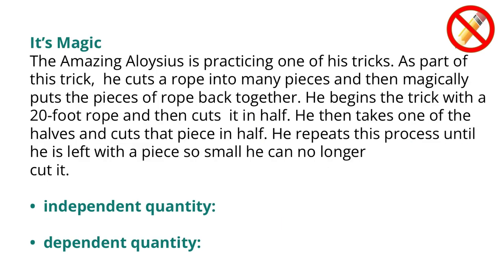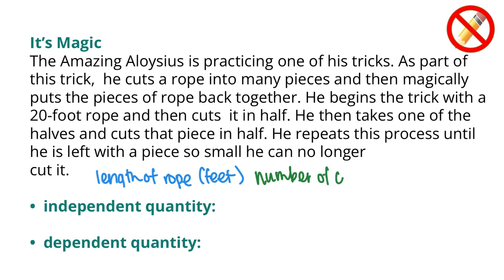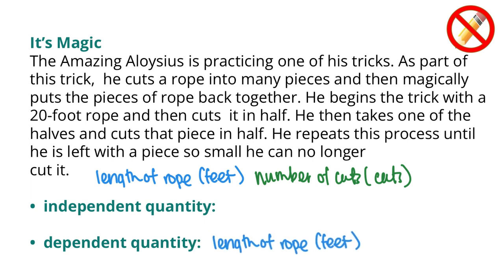The Amazing Aloysius is practicing a trick where he cuts a rope into many pieces and magically puts them back together. He begins with a 20-foot rope, cuts it in half, takes one half and cuts that in half, and repeats until the piece is too small to cut. The two quantities are the length of the rope, measured in feet, and the number of cuts, with units of cuts. The length of the rope depends on the number of cuts, so length of rope is the dependent quantity and number of cuts is the independent quantity.